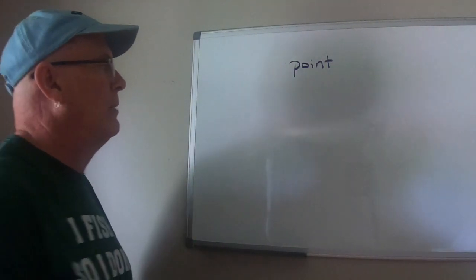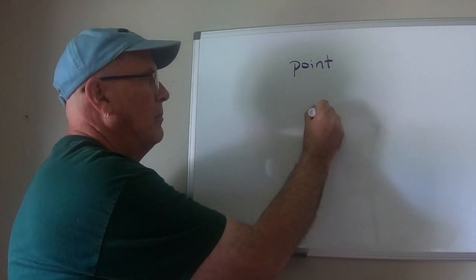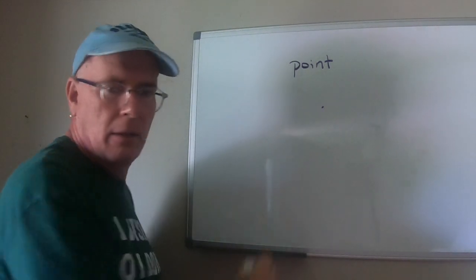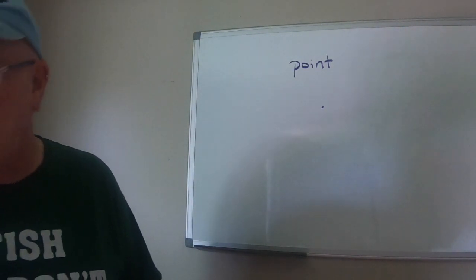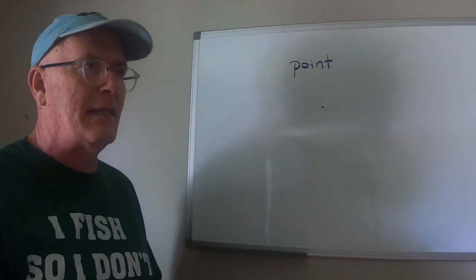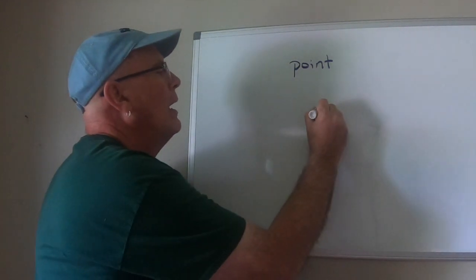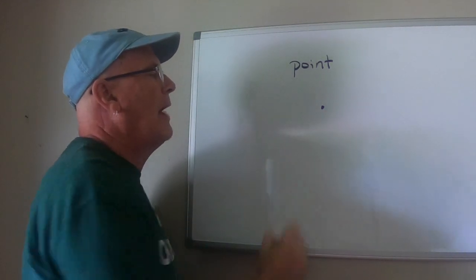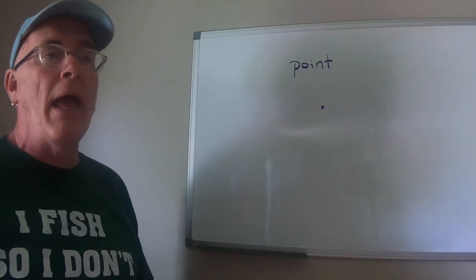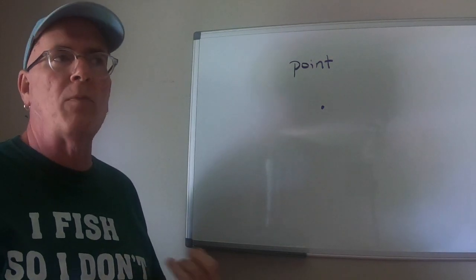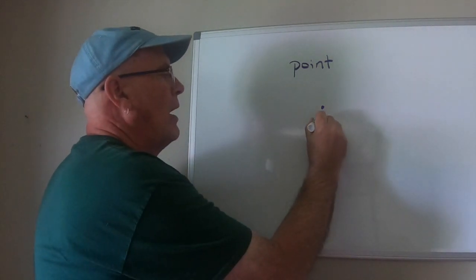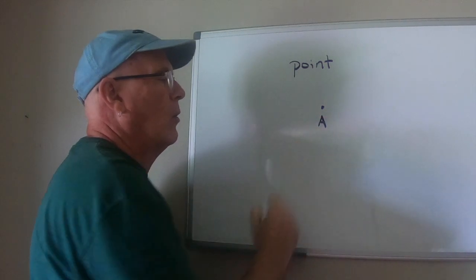All right, so a point is represented by a dot but a point is not a dot. They're not the same thing. So a point is a location. That point is right there and I can name a point so that I can know which point I'm talking about. So I'm going to call that point A.